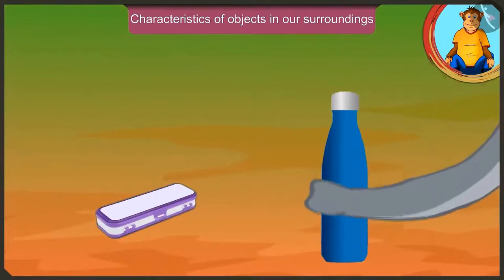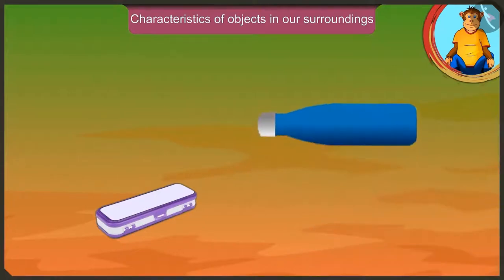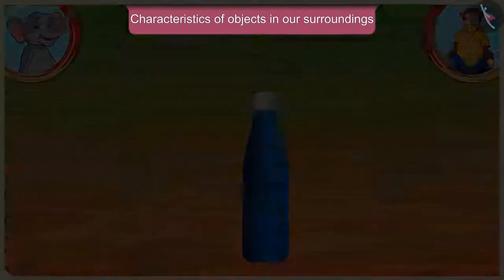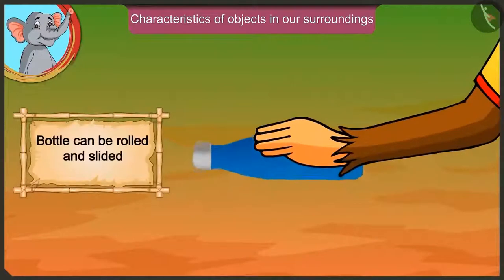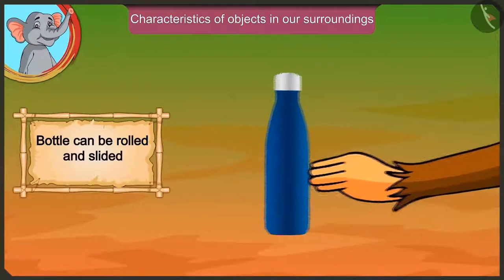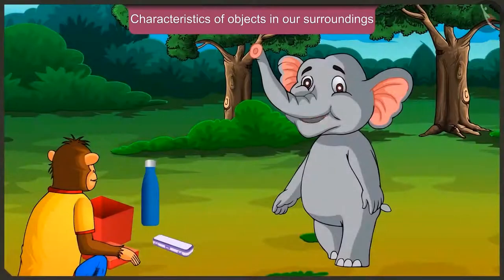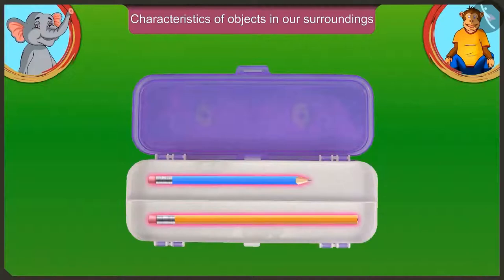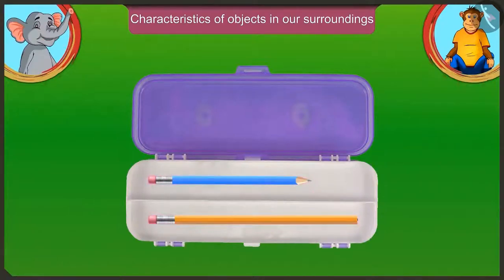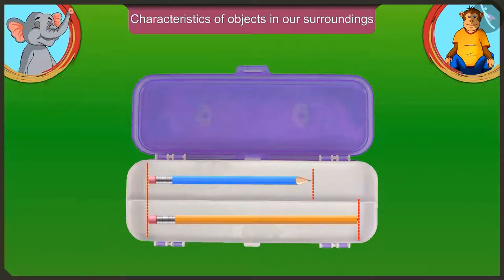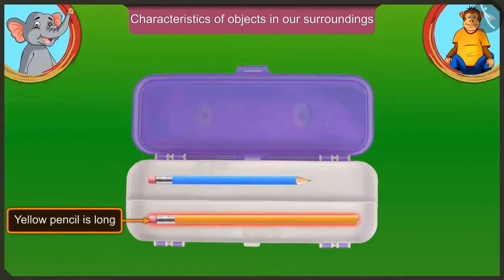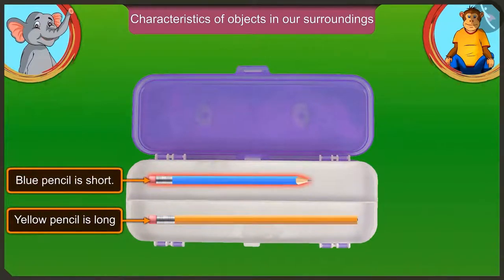And this bottle can be rolled like this. Look Jaggu, in this pencil box, the yellow pencil is longer than the blue pencil. This means that the blue pencil is small. The yellow pencil is long and the blue pencil is short.